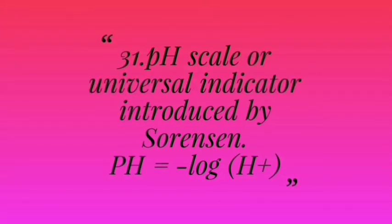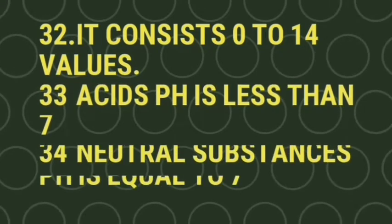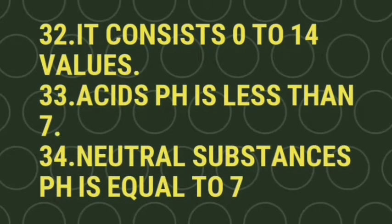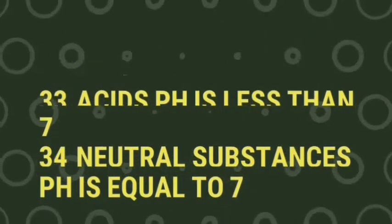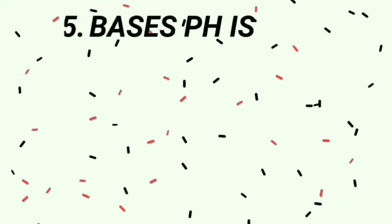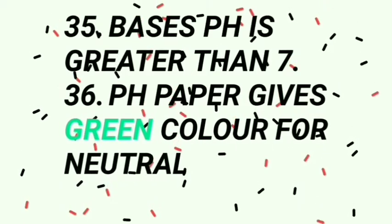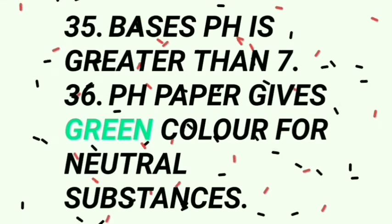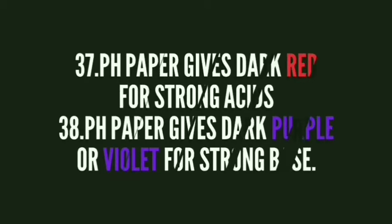The pH scale or universal indicator was introduced by Sorensen. pH equals minus log of [H⁺]. The scale consists of values from 0 to 14. Acids have a pH less than 7; neutral substances have a pH equal to 7; bases have a pH greater than 7. pH paper gives green color for neutral substances, dark red for strong acids, and dark purple or violet for strong bases.